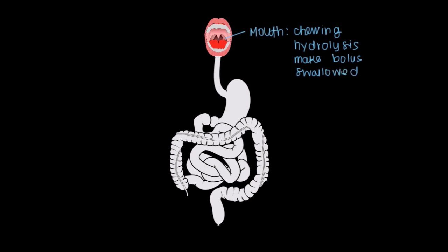After we swallow the food, where do you think it goes? This guy right here — the esophagus. This is one of the more boring parts of the GI tract because all we do here is just propel our bolus and pass it on down to the next structure. We don't really do anything to it. Kind of boring. But the next part is a little more exciting.